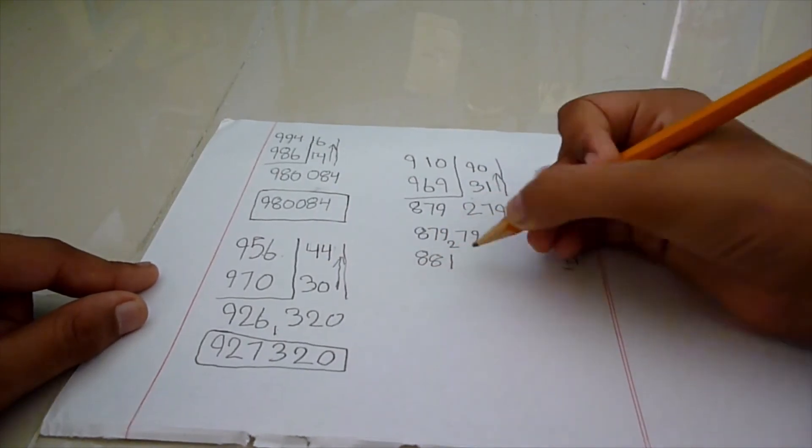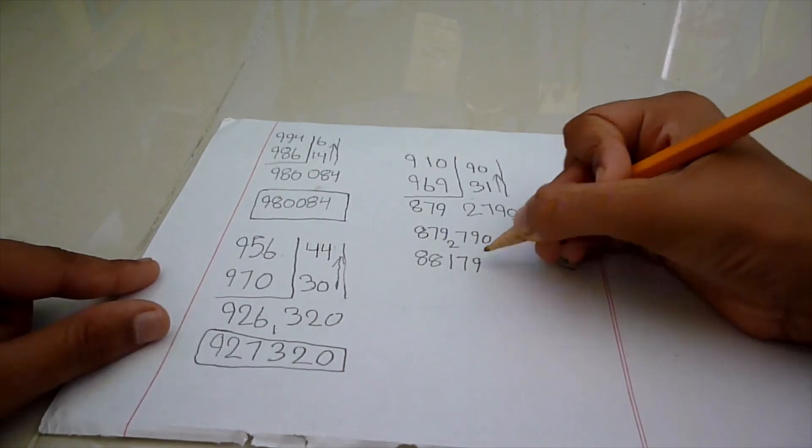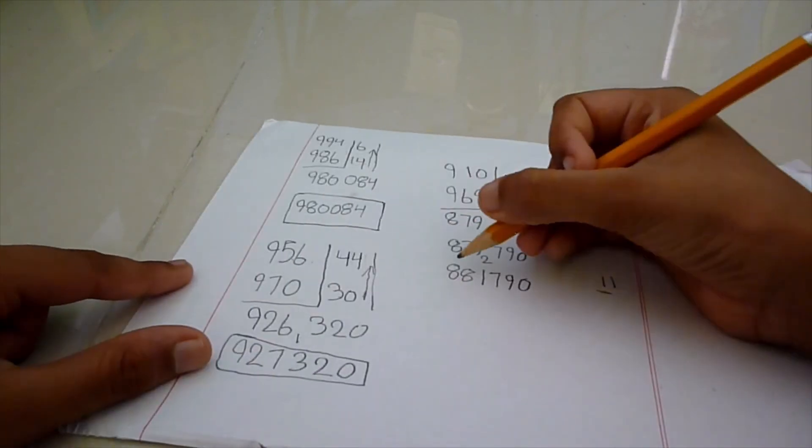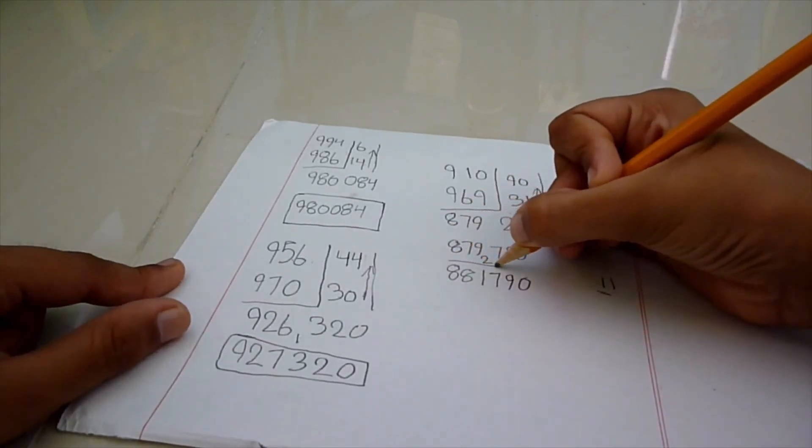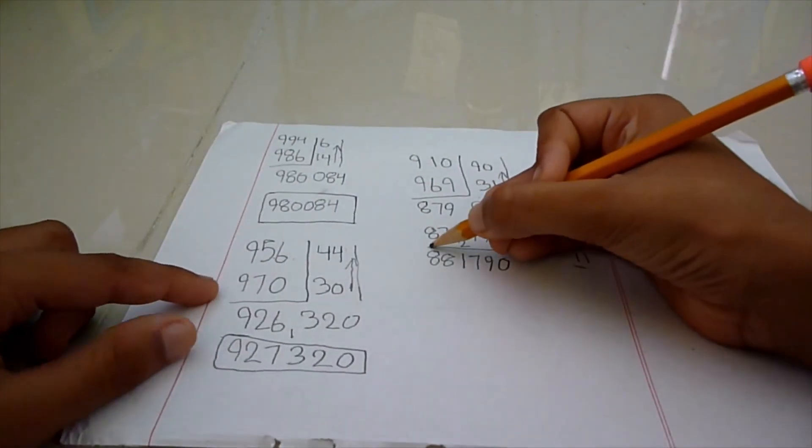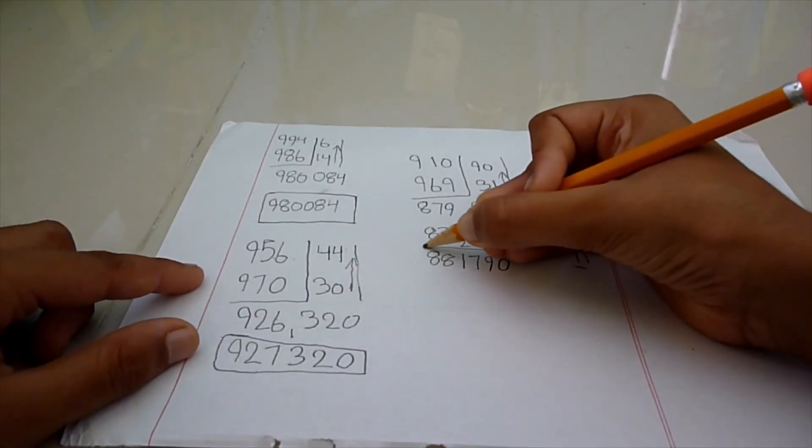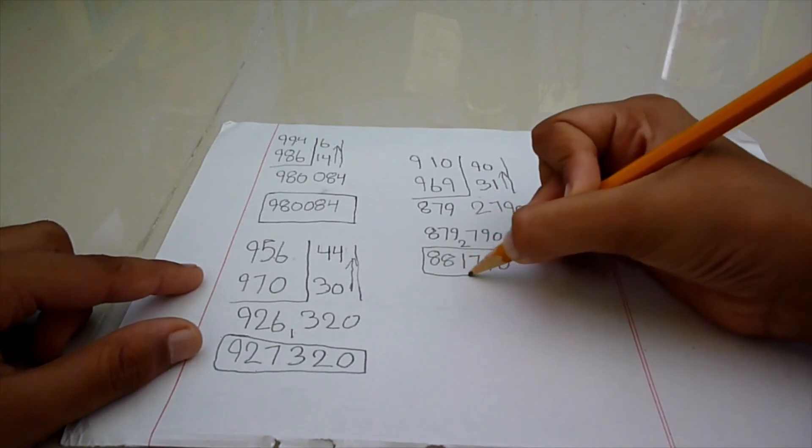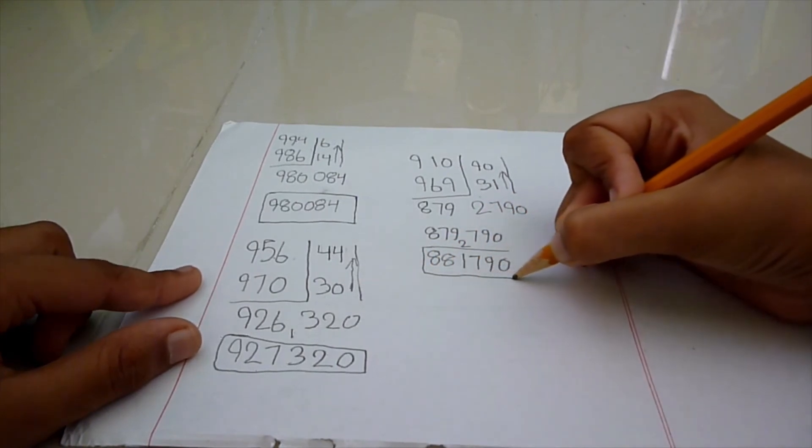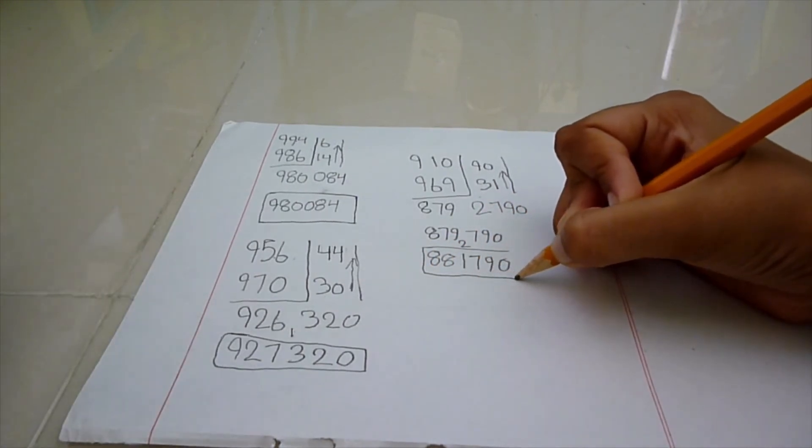1, 7, 9, 0, which is the answer. So, the answer for 910 multiplied by 969 is 881,900—sorry, 790.